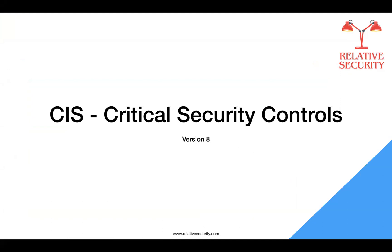Hello everyone, welcome back to Relative Security. Today we are going to start a new series covering the critical security controls. This first video will cover a little bit of history on critical security controls and we will discuss the first control, with other controls discussed in subsequent videos. The Center of Internet Security controls, formerly known as SANS Top 20 Critical Security Controls, is basically a set of best practices for cybersecurity developed by a global community of experts. These controls are designed to provide specific and actionable guidance to help organizations improve their cybersecurity posture and effectively defend against any cyber threat.